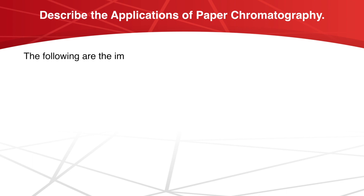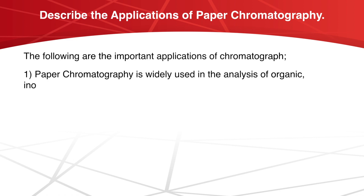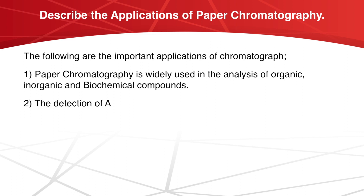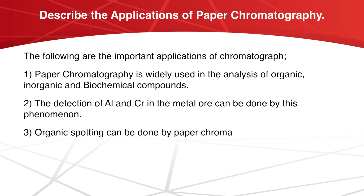The following are the important applications of paper chromatography. It is widely used in the analysis of organic, inorganic, and biomedical compounds. The detection of aluminium and chromium in metal ore can be done by this phenomenon. Organic spotting can also be done by paper chromatography.